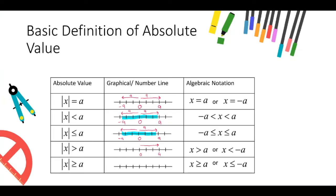For the absolute value of x more than a, the distance of x from 0 on a number line is more than a units away to the left and a units away to the right. So the range value of x is more than a or x is less than minus a. Similarly, for absolute value of x greater than or equal to a, the range value of x is greater than or equal to a, or the range value of x is less than or equal to minus a.